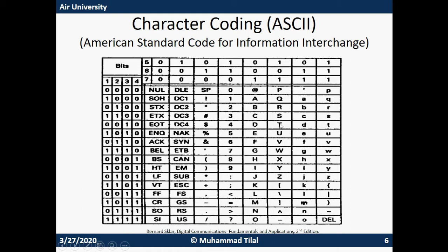Moving back to our example where we convert the word 'THINK' into a bitstream: for T we have bits 0010101 — seven bits — and depending on even or odd parity we add an eighth bit. Similarly for H: the first four bits are 0001 and the last three bits are 001, and the eighth bit is the parity bit. Following the same process we can convert I, N, and K.